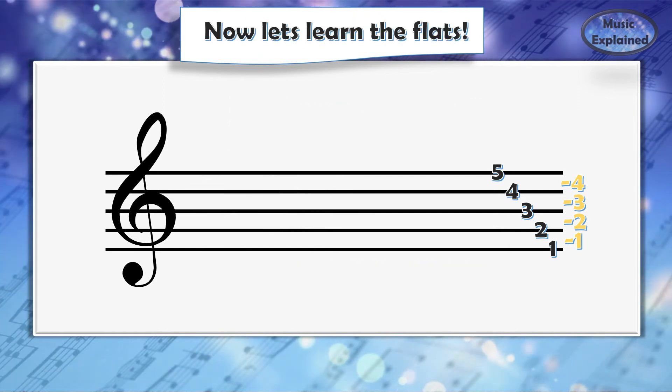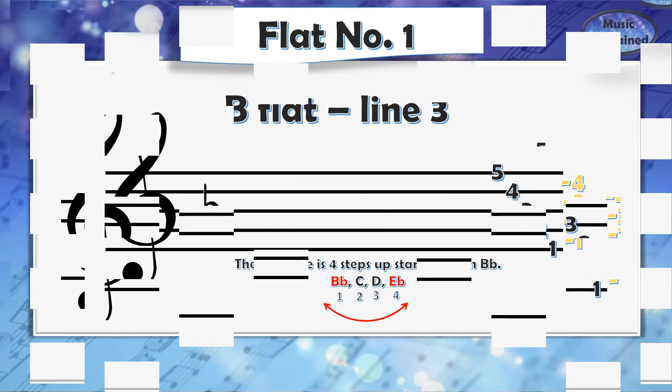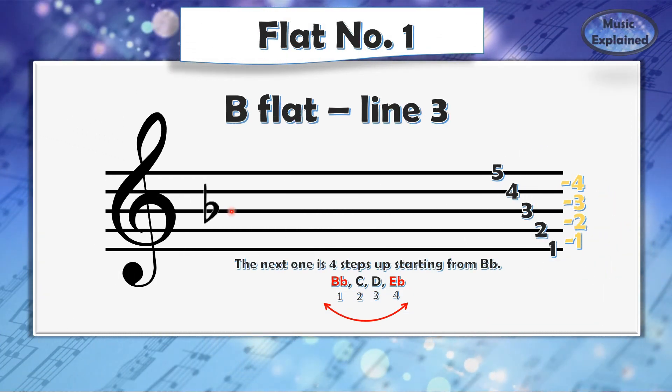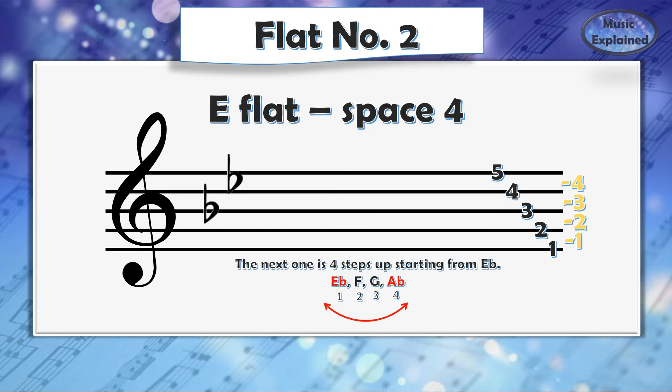Now let's learn the flats. First is B-flat on line three. If we count four steps up starting from B-flat, we will get to E-flat. E-flat is our flat number two. It's on space number four on the music staff.